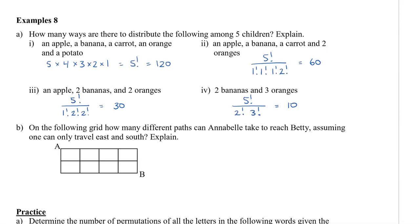Let me show you another very common question with permutations. We have this following grid and the question's asking you how many different paths can Annabelle, which is at A, take to reach Betty, which is at B. And we're going to assume that one can only travel east and south. If you think about this, we have east, east, east, and east, four directions to go east.